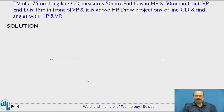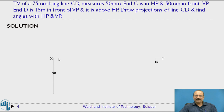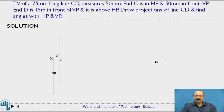We draw the XY line first. Since C is 50 mm in front of VP, we measure 50 mm below the XY line — any distance from VP is measured below the XY line, and any distance from HP is measured above the XY line. We draw a locus line at 50 mm below XY. Since C is in HP, its distance from HP is 0, so we place C on the XY line itself. We mark this as C dash.